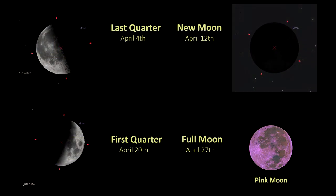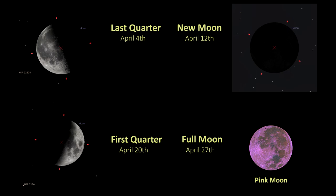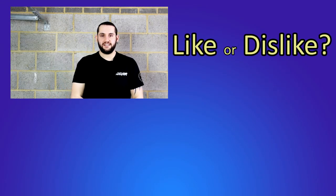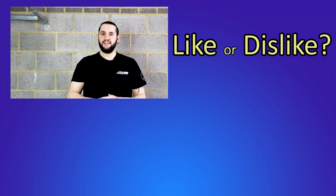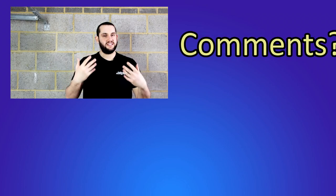Here are the moon phases for April: last quarter moon on the 4th, new moon on the 12th, first quarter on the 20th, and the Full Pink Moon on April 27th. You can see those dates fall right into the Lyrids meteor shower, which is why the moon is going to wash out the sky a little bit for that shower. But that's it — that is the night sky for April. I hope this list has given you some inspiration.